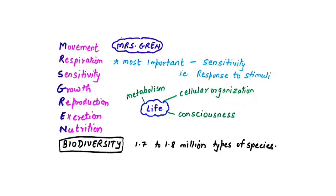Among all seven life processes, the most important one — shown by all living organisms, whether unicellular or multicellular — is Sensitivity. Sensitivity is the response to stimuli. It is shown by plants, animals, fungi, and unicellular microbes as well.